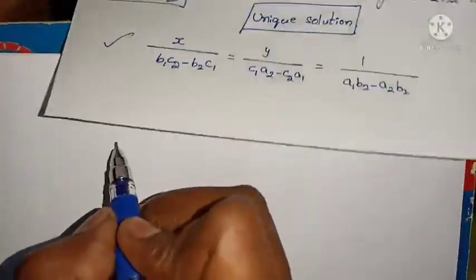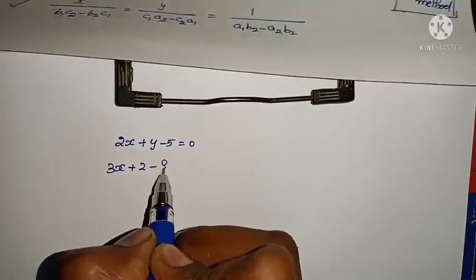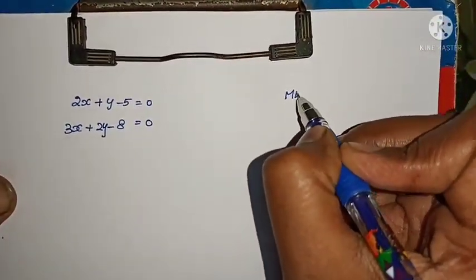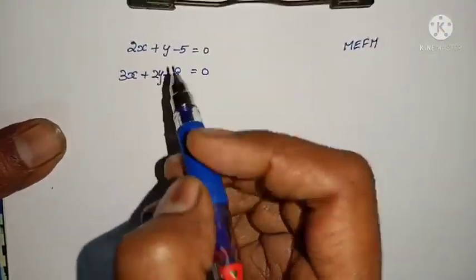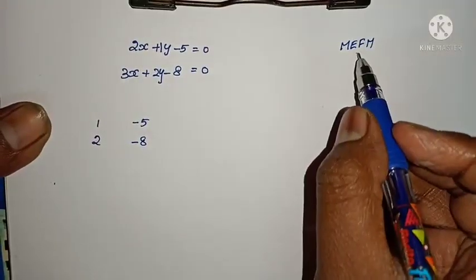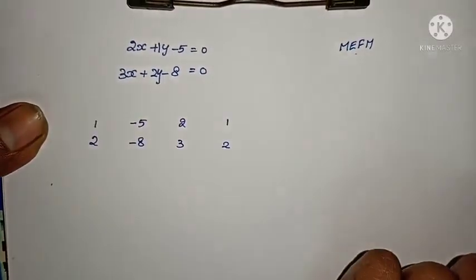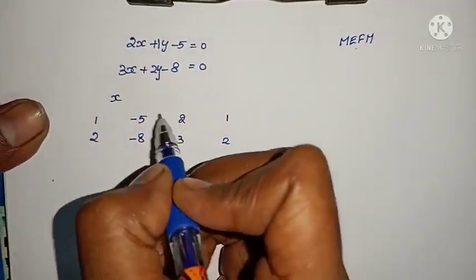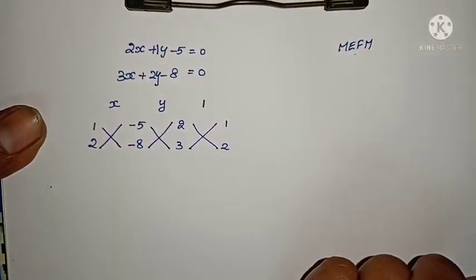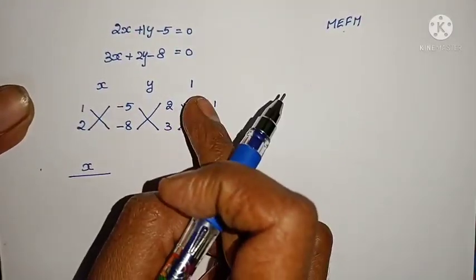Given equations: 2x plus y minus 5 equals to 0, and 3x plus 2y minus 8 equals to 0. Using MEFM method — M means middle terms: 1, 2. Write them. N terms (end/constant): minus 5, minus 8. First terms: 2, 3. Again middle terms: 1, 2. Write like this. In the middle of the first pair write x, in the middle of the second pair write y, and here write the constant value 1. Then just do cross multiplication to get the answer.